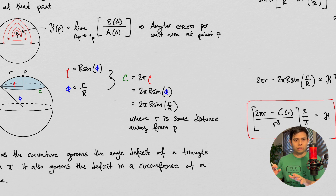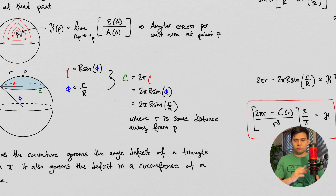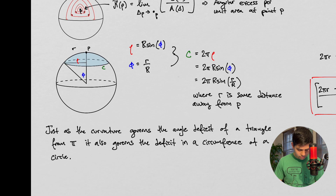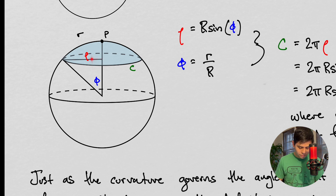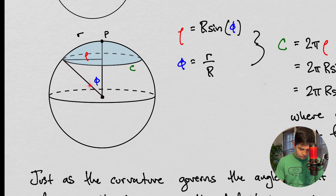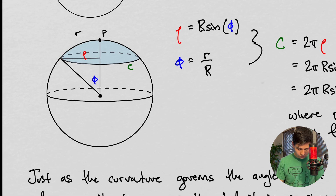We're going to go over the local Gauss-Bonnet theorem at the end of this video to top things off before the next video. Let's define rho as the radius from a center point to the edge of the sphere, and we have an angle subtended there. Then R here is going to be related to the angle subtended on the surface.